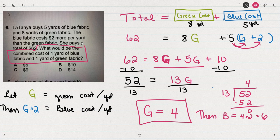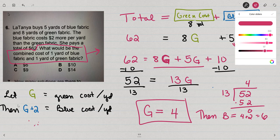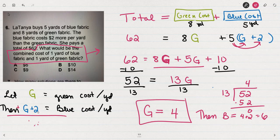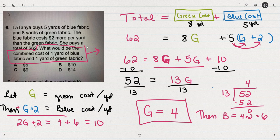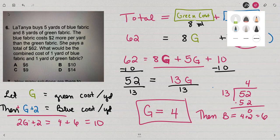And then when I go to the final answer, what's the combined cost? In other words, I'm needing to find this sum: G plus (G plus 2). So 4 plus 6 equals 10.